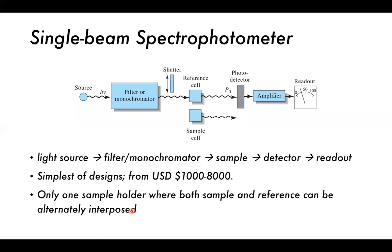This is a simple spectrometer for UV-Vis absorption spectroscopy. We have a light source on the left-hand side producing light of energy hν. This passes through a filter or monochromator to create a single wavelength of light, which is then shone onto our sample. We have a shutter which can turn the light on and off. Then we have a reference cell and a sample cell, usually on a lever which can be pushed in or out, allowing a particular cell to be in the path or not.